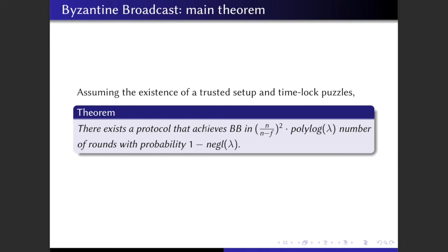Assuming the existence of a trusted setup and the existence of some hard time-lock puzzle, then there exists a protocol that achieves Byzantine Broadcast in n divided by the number of honest users squared times polylog lambda number of rounds. Here lambda is the security parameter.